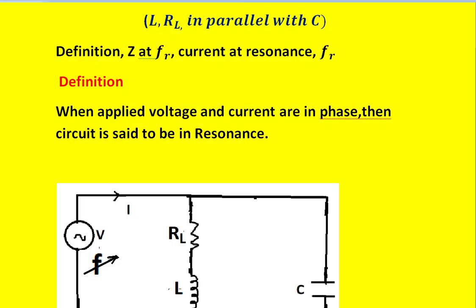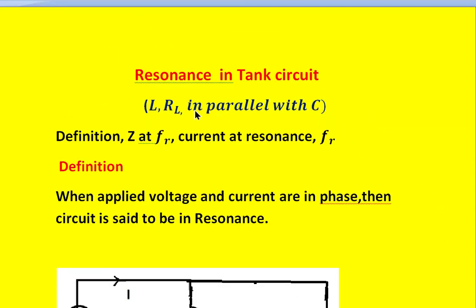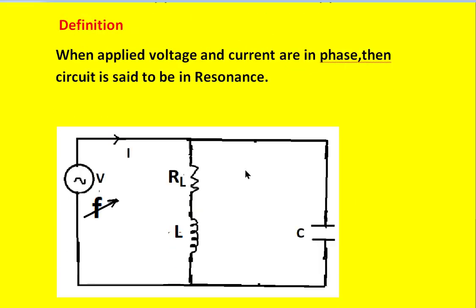Hello friends, today I will discuss the resonance frequency of tank circuit. Tank circuit means it consists of RL in series with L, and the combination is in parallel with the capacitor. This combination is in parallel with the variable frequency AC supply, and this AC supply provides the total current I.